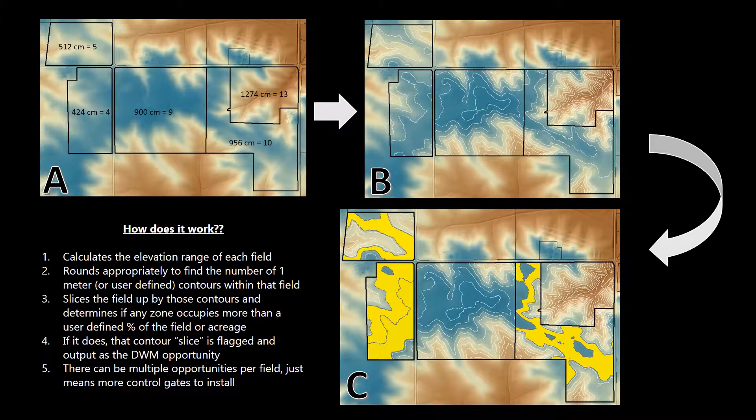The field is then sliced up by those contours and then the slices are determined if any of those zones occupy more than the user defined percent of the field or user defined acreage. So in our case, do any of these slices make up 30 percent of the field? If it does, then that slice is flagged as an opportunity for drainage water management shown in image C by yellow.